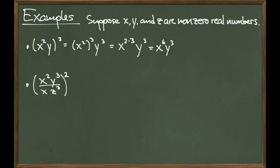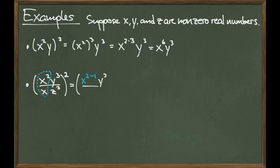For our next example, consider the quantity x squared times y to the third divided by x times z to the third, all raised to the power of 2. Whenever dealing with a fraction, it's good to look for numbers that show up in both the numerator and the denominator. In this case, we see an x appearing twice, so this is a good place to call the quotient rule. x squared divided by x becomes x to the 2 minus 1, which simply becomes x. I was able to simplify the x terms while leaving y and z unaffected.